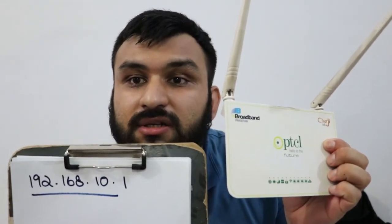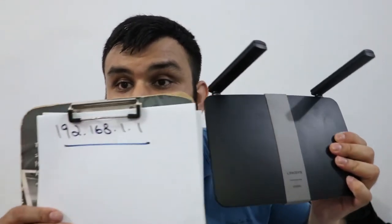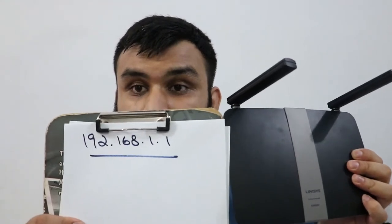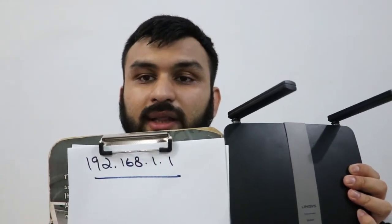The default IP address for the primary router is 192.168.10.1 and the IP address for the secondary router is 192.168.1.1. These are the default IP addresses of these routers. To find these default IP addresses, connect your router to your computer via Ethernet or Wi-Fi and follow these steps.